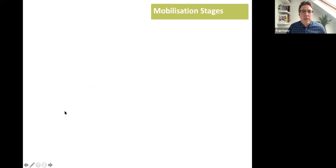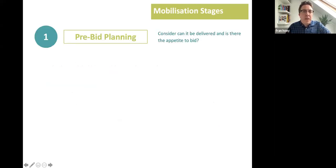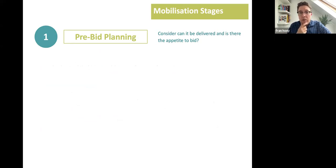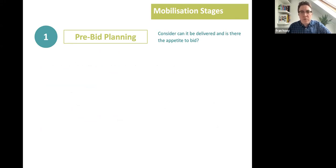Here's a quick flavor of the key mobilization or implementation stages. First, pre-bid planning: you bring in different parties to understand whether you can actually deliver the program — is there an appetite to bid? You'll go through pre-qualification, but there should be some planning around whether you can implement in the timescales, whether you have the capacity and resources, and whether you have the appetite to invest in advance of winning. The bigger the contract, the bigger the risk. You also need a flavor from the commissioner as to whether there'll be any contractual restrictions that may challenge that.